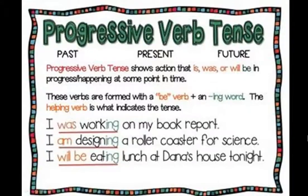In the three examples, the first one is: 'I was working on my book report.' The word 'working' is the progressive verb tense — we have added -ing. Before that, we have added the past auxiliary, that is 'was'. Progressive verb tense shows action that is, was, or will be in progress — happening at some point in time.